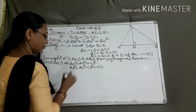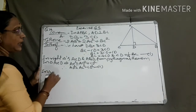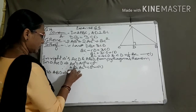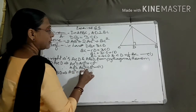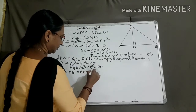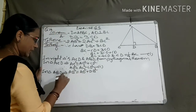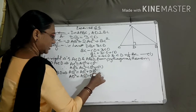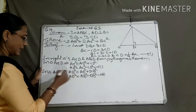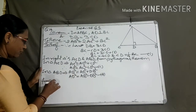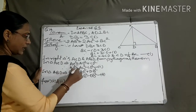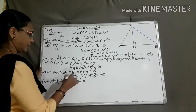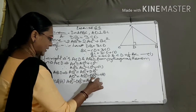And in triangle ABD, from Pythagoras theorem: AB square equal to AD square plus DB square. From here, AD square equal to AB square minus DB square. Let this be equation number 3. From equations 2 and 3, we write: AB square minus DB square equal to AC square minus CD square.